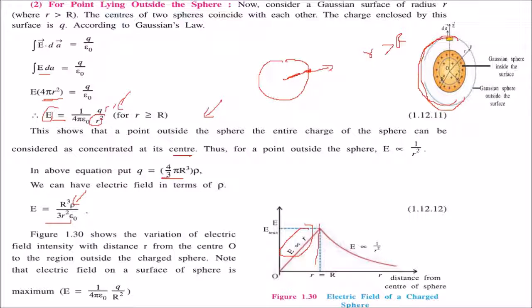After that, if you go outside the sphere, it decreases as 1/r², inversely proportional to r squared. This is the graphical representation of the electric field of a uniformly charged sphere.